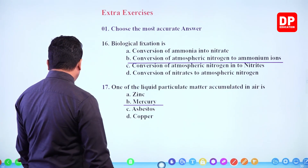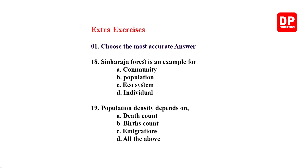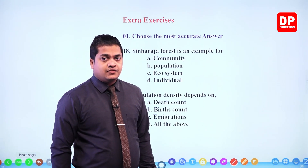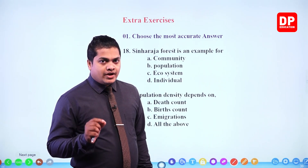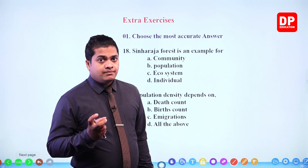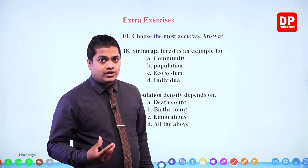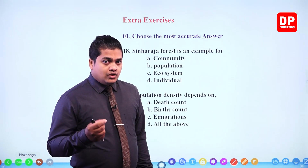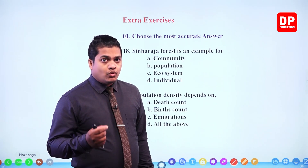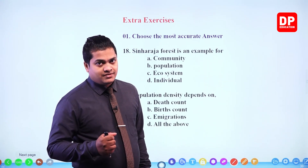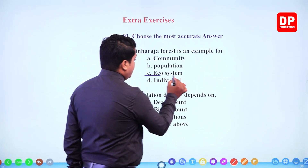Next: Sinharaja forest is an example of — community, population, ecosystem, or individual. Within Sinharaja forest we can observe both abiotic things (rocks, water, sand, soil) and biotic things (plants and animals). Both abiotic and biotic things interact within Sinharaja forest. So the answer should be ecosystem.